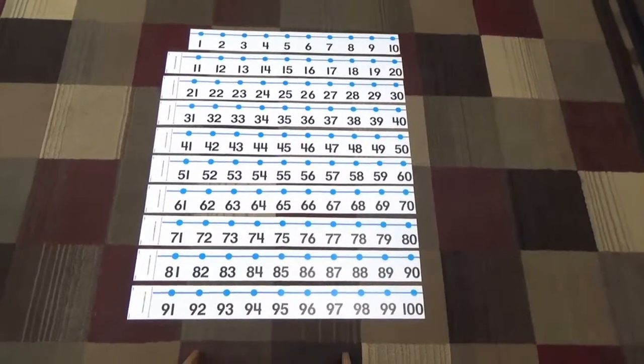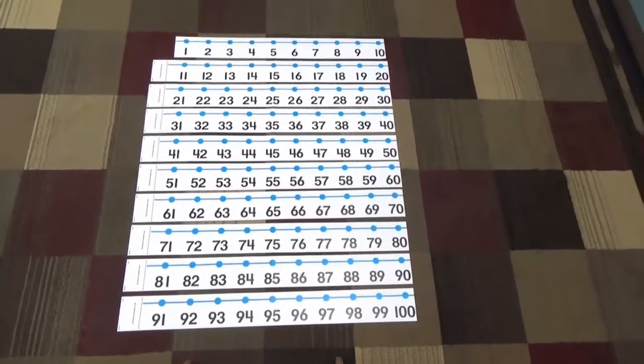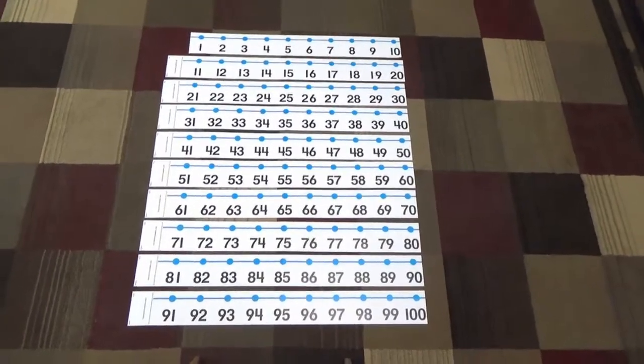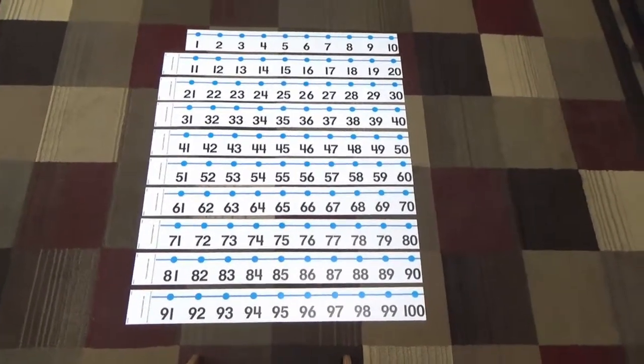And if we were reading, we'd say down the page. But in this case, we'll say down the lines. So doing that, you can count all the way from one to 100.